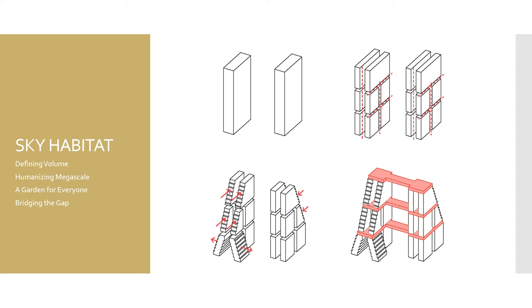The bottom left diagram shows the stepping of spaces, which is meant to create a garden for everyone as well as getting as much light and natural ventilation into the building. To bring this project all together, Safdie creates bridges in the sky that connect the two towers, which now serve as large community spaces for residents to enjoy.